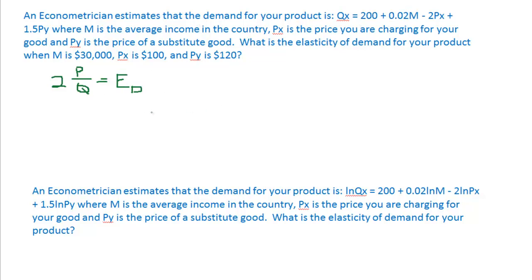But we have the equation, and we know the quantity of x, good x for your product x, is Q_x = 200 + 0.02M - 2Px + 1.5Py.